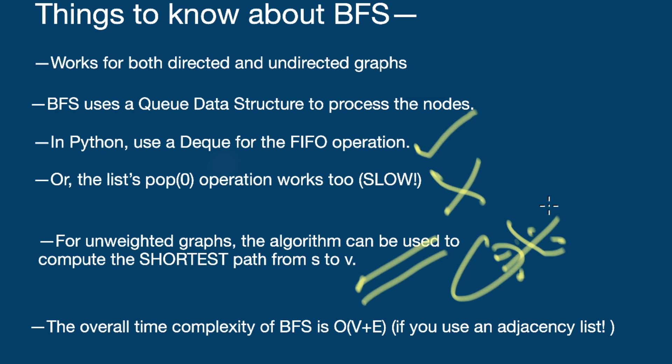For weighted graphs you have several algorithms like Dijkstra's shortest path algorithm, Floyd-Warshall, or Bellman-Ford depending on your application. But for unweighted graphs, this simple algorithm just does the job to find the shortest path from the source to the destination. The overall time complexity of a well-implemented BFS is O(V + E), where V is the total number of nodes and E is the total number of edges. Using an adjacency list, this can be achieved in O(V + E).